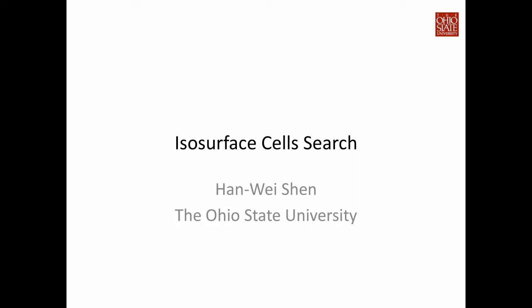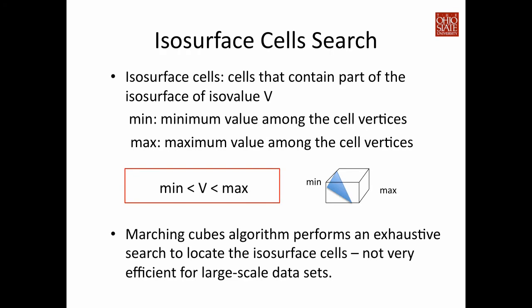Welcome to the topic of isosurface cell search. In this video I'm going to show you how to efficiently find cells that are intersected by an isosurface. Isosurface cells are cells that contain part of the isosurface given the iso value v. A cell is intersected by the isosurface if the minimum value among its vertices is smaller than the iso value and the maximum value among the vertices is greater than the iso value. Because we assume the value within the cell changes linearly, we can be sure the isosurface must intersect through this cell.